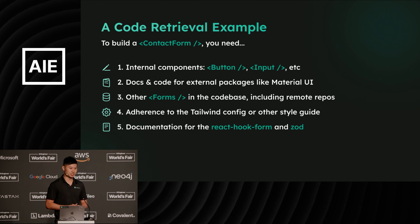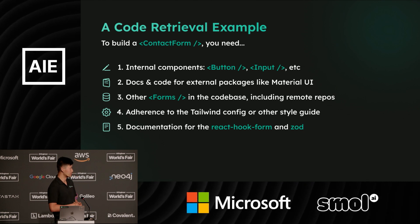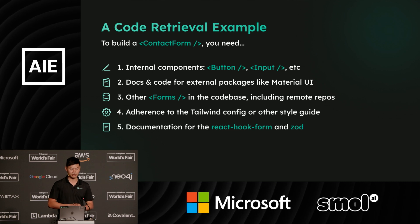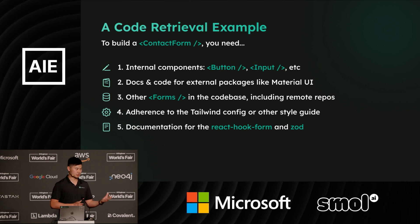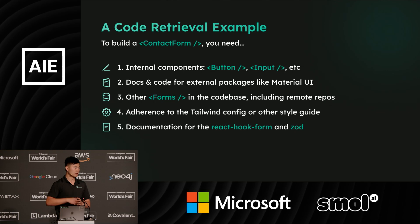This is really where context retrieval comes in. We need to build a contact form that is in line with our design system components — buttons and inputs. It has to pattern match with local instances of other forms inside your code base, ingest your style guide, and if you're using Tailwind, detect and make the form look and feel like every other thing on your site. And of course, there's documentation both locally and externally for packages and other dependencies. The question becomes: how do you collect and rank these items so that code generation can be both fast and accurate?